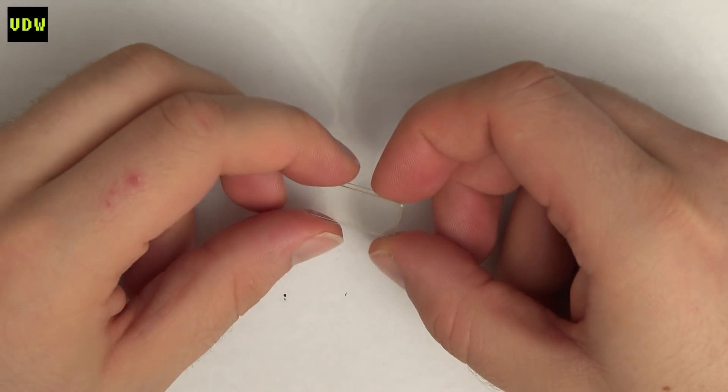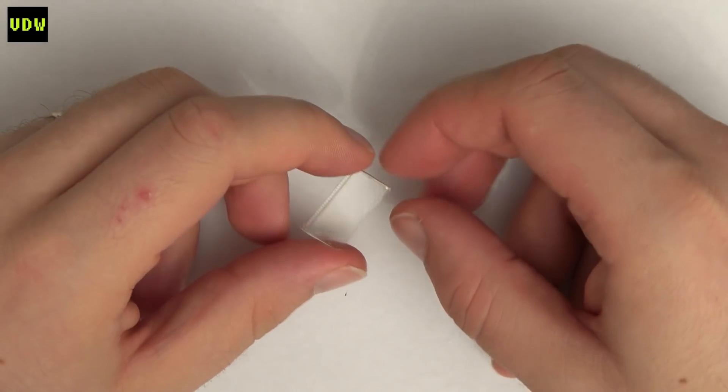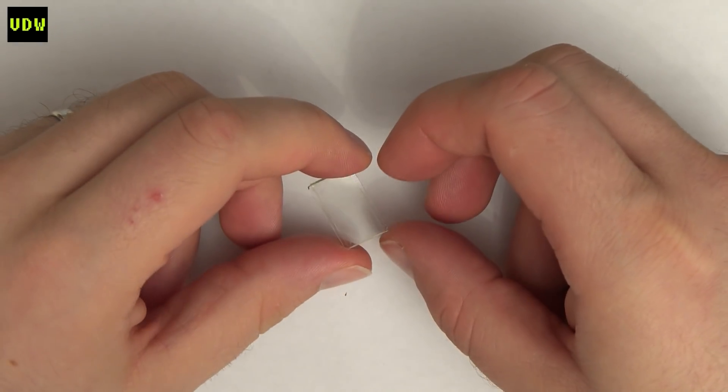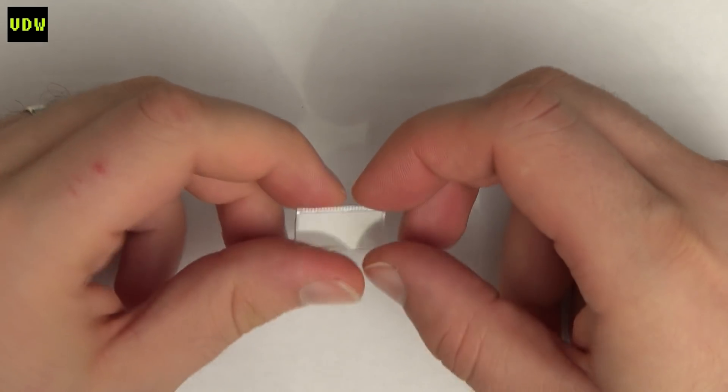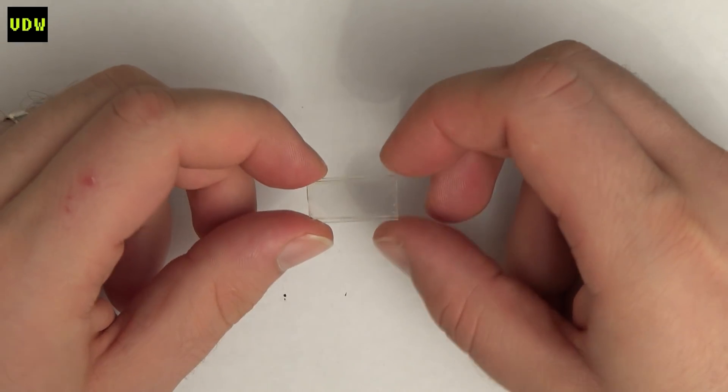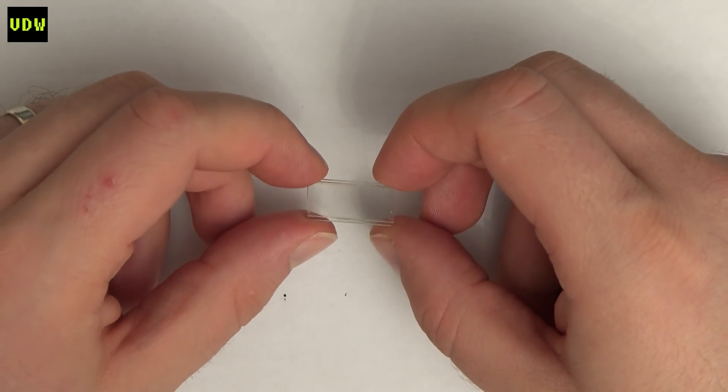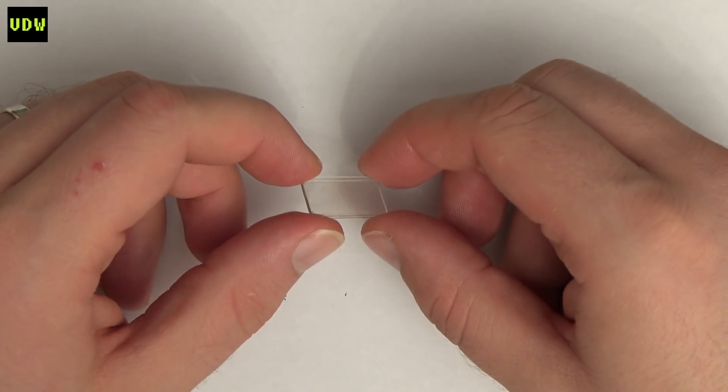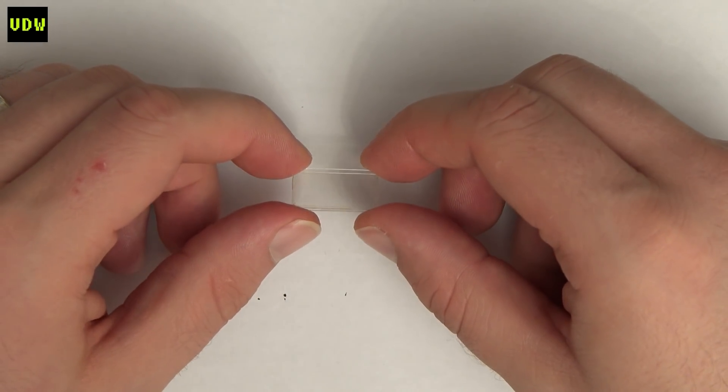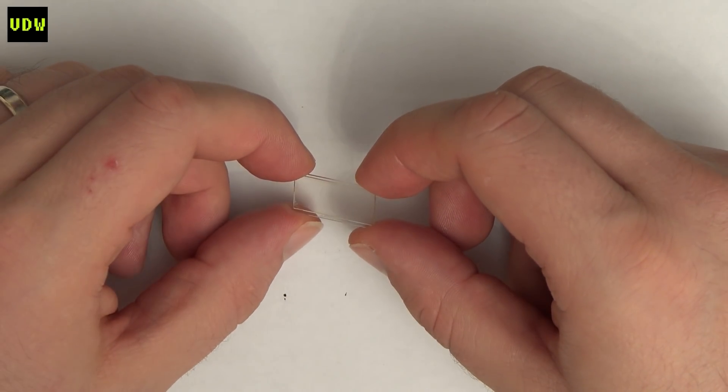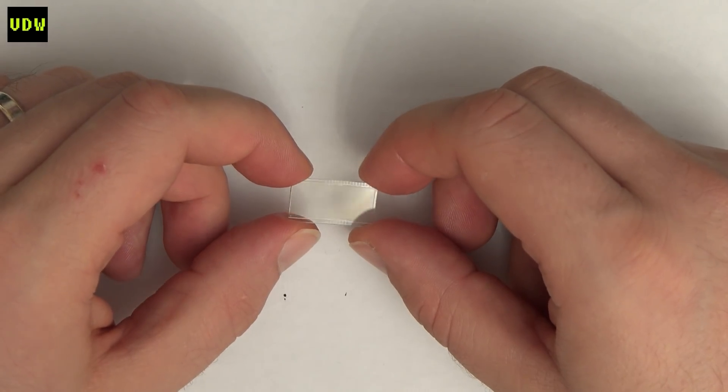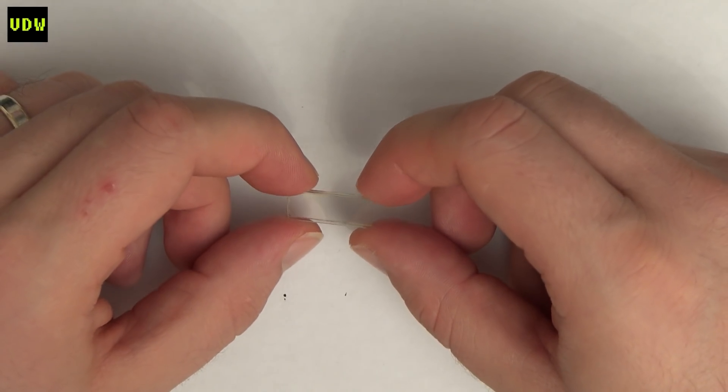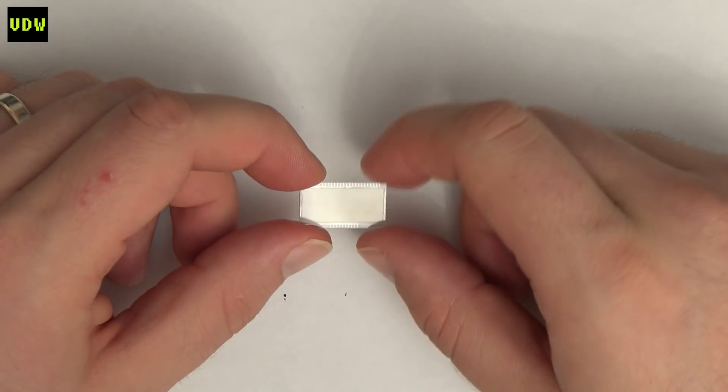So here we are, 15 painstaking minutes later and a lot of scrubbing with isopropanol. We can see that we have this beautiful LCD. You can't see any issues with it, no matter which angle we look at it from. So has that burn been removed together with the polarizing filters? Only one way to find out.